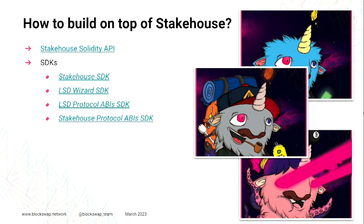Now that we've touched upon what Stake House is, let's see how we can build on top of it. Stake House needs 32 ethers for the validator. We were discussing about LSDs a few months back and now we've worked on it, basically lowering the capital barrier for users, because most of us don't have 32 ethers just laying around to invest in a validator. So how can you build on top of it?